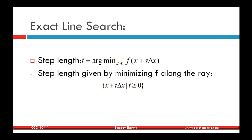Here is the exact line search method. The step length t is the argmin over s ≥ 0 of f(x + s·Δx). This implies we exactly minimize the function f along the ray x + t·Δx, where t ≥ 0, and the minimizing value of s is assigned to the step length t.